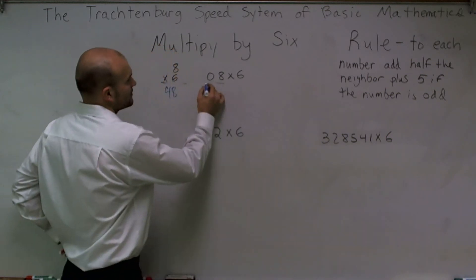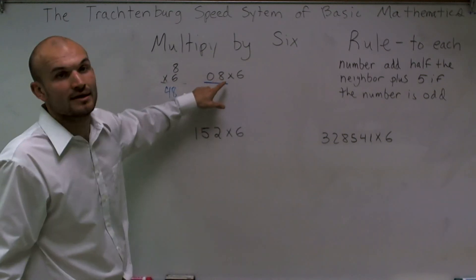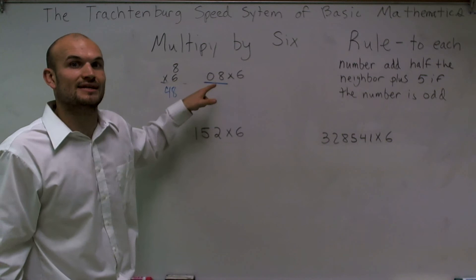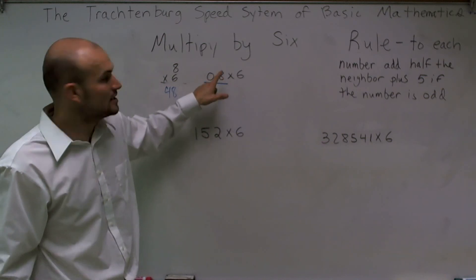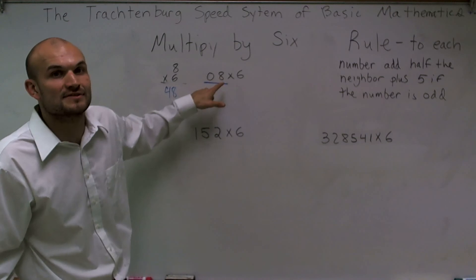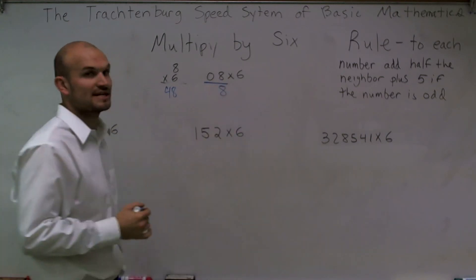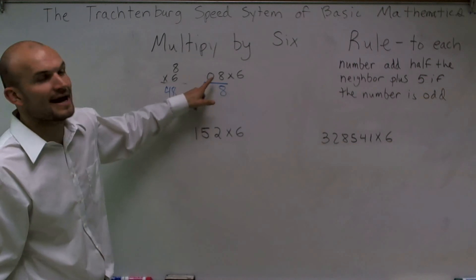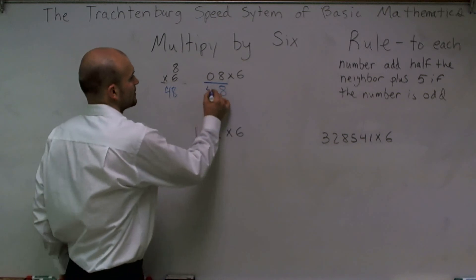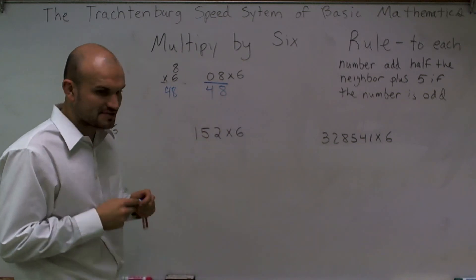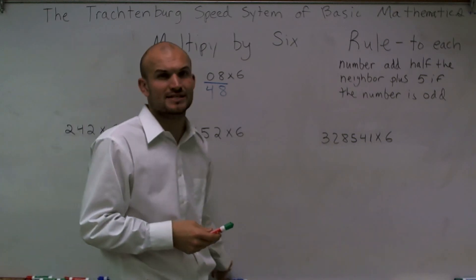So if I look at this number eight, I need to add half the neighbor. The neighbor is the number that's directly next to the right of your number. Eight does not have a neighbor, so therefore I'm going to be adding half of zero, which is zero. So I'll drop down my eight. That is my first answer. Then I take zero, add half of the neighbor, which is eight. Half of eight is four. Zero plus four is four. That is for a very simple problem, one digit times one digit.